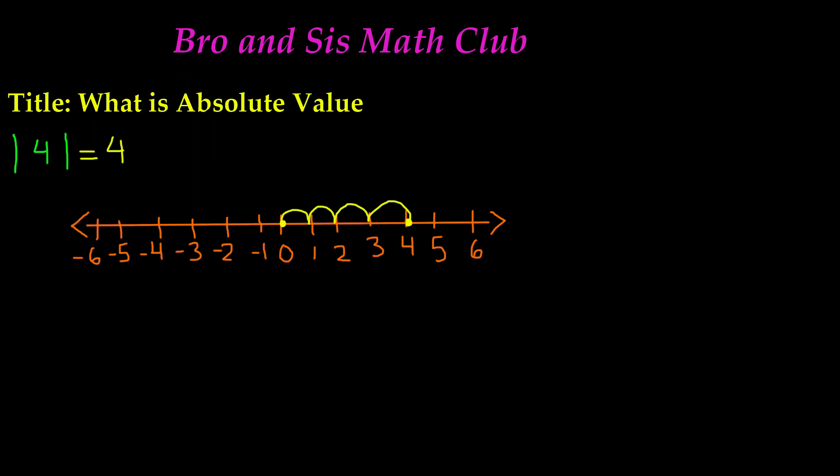Now let's do another one. This time let's do one with a negative. Let's say we have to find the absolute value of negative 3. Once again, put a dot on negative 3 and count: 1, 2, 3. So it took three spaces. Just because this is negative 3 does not mean the absolute value is negative 3. It is going to be a positive 3.